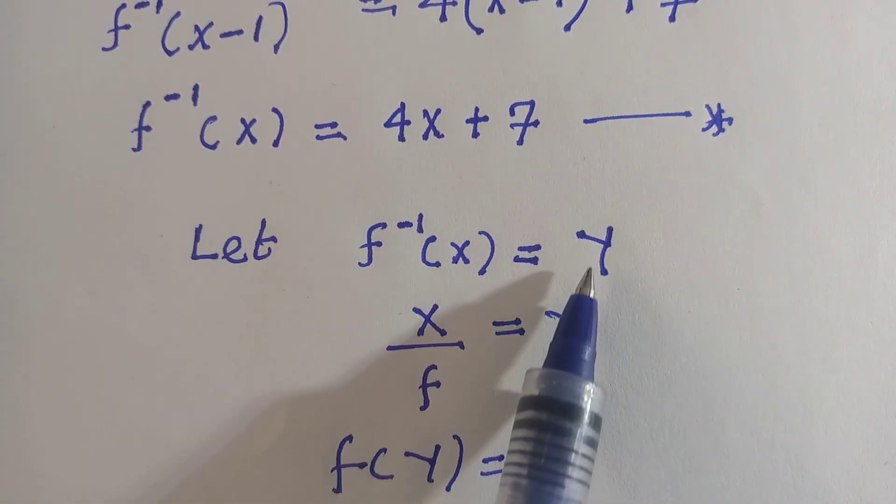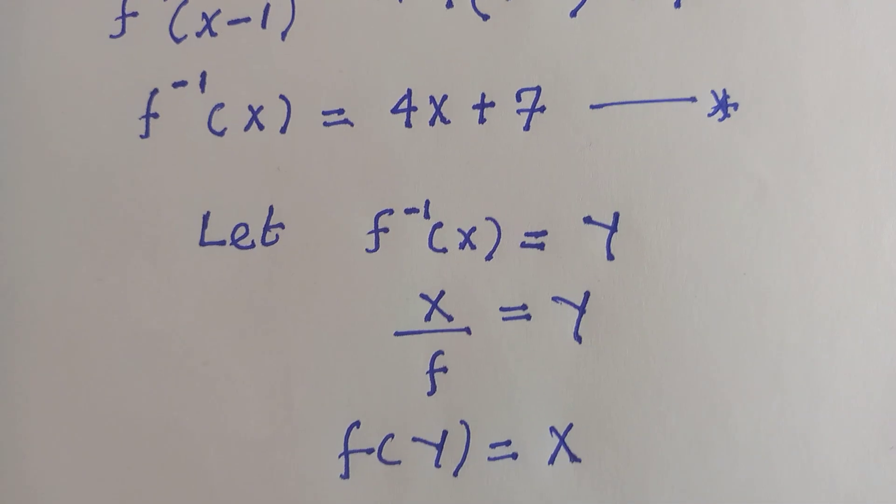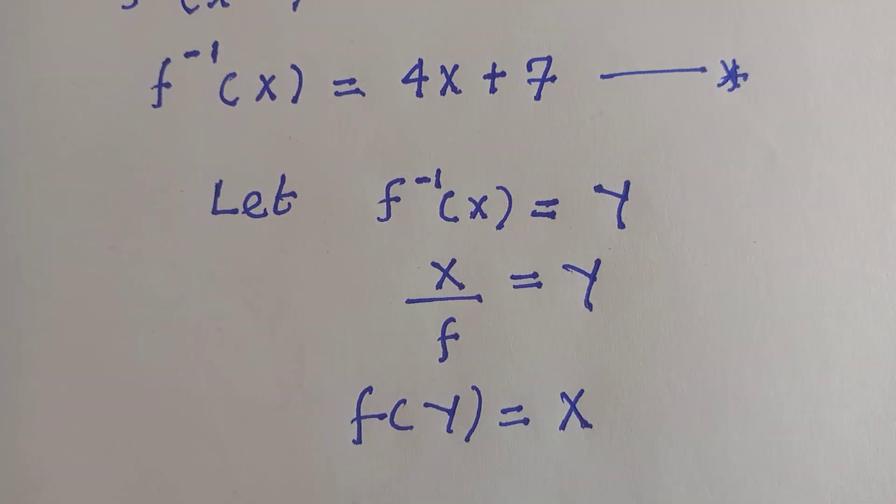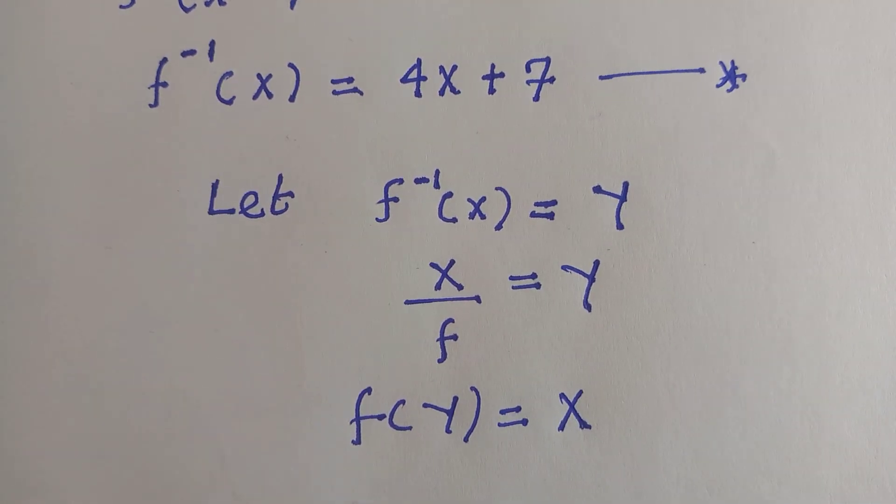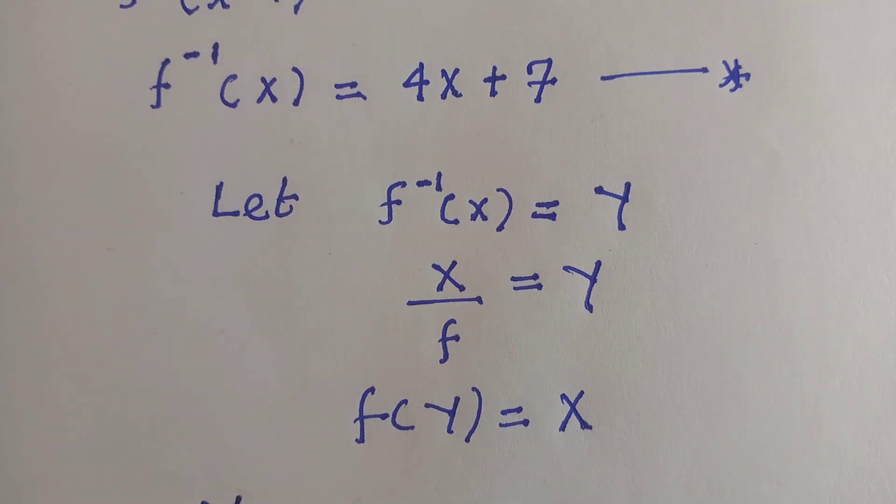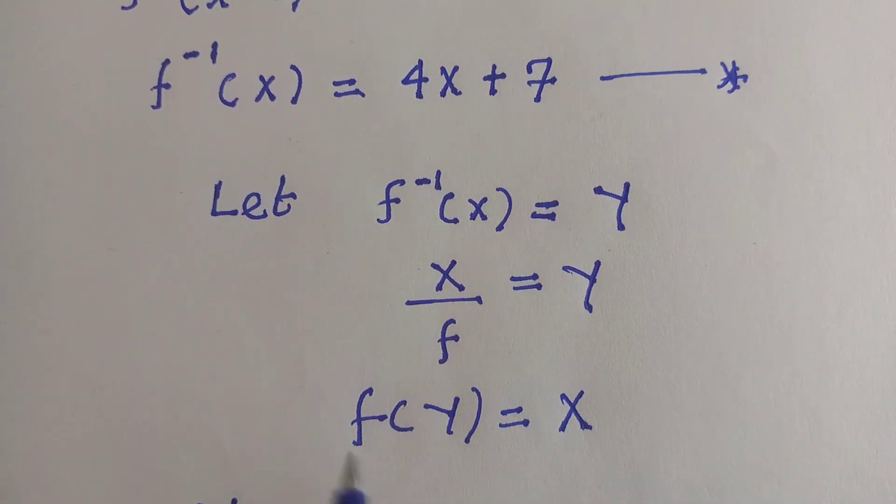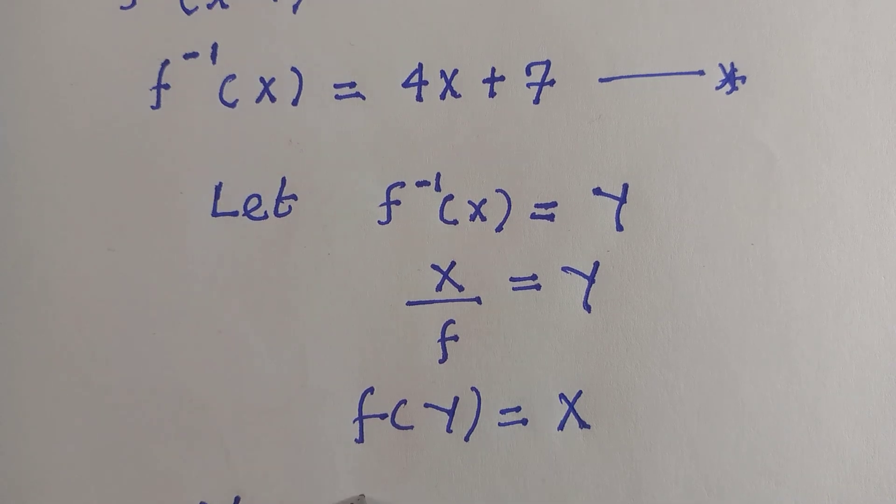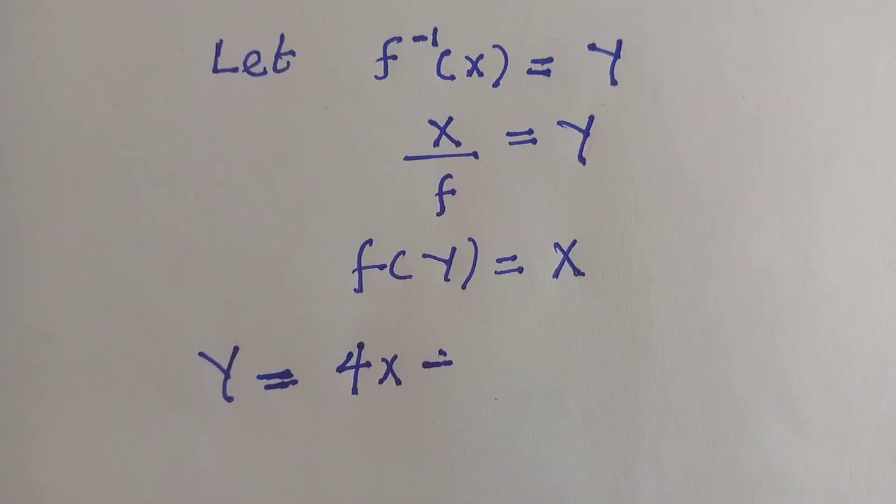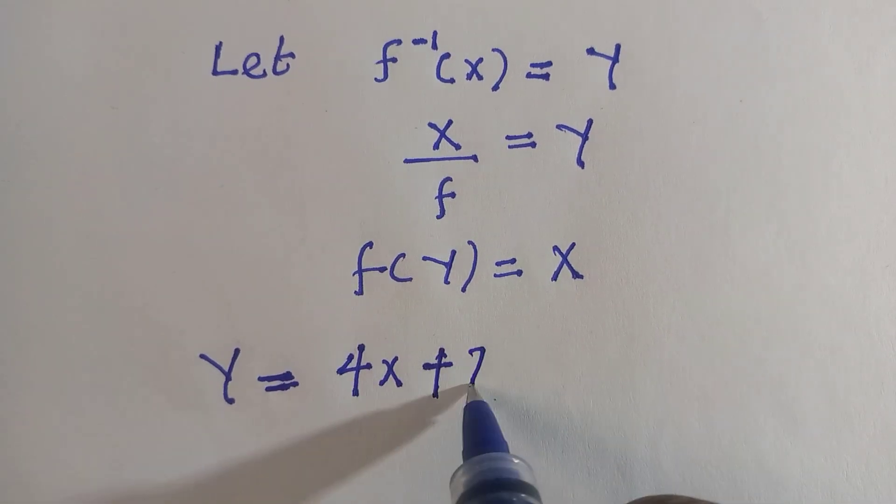Then from what I started above, f inverse of x equals y. I'm going to replace it—instead of f inverse of x, I'm replacing it with y. Here we have y equals 4x plus 7.